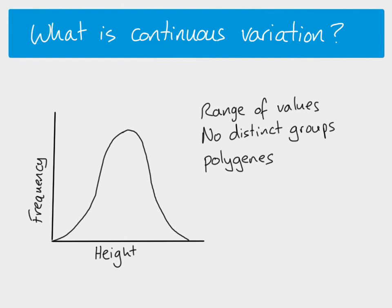Continuous variation in a characteristic like height is controlled by polygenes — meaning many genes all contribute to that characteristic. There isn't one height gene in humans; there are many height genes that each have a small effect, adding together, some more than others, to produce the overall height. Importantly, it's not only polygenes — the environment also affects the phenotype when you have continuous variation.